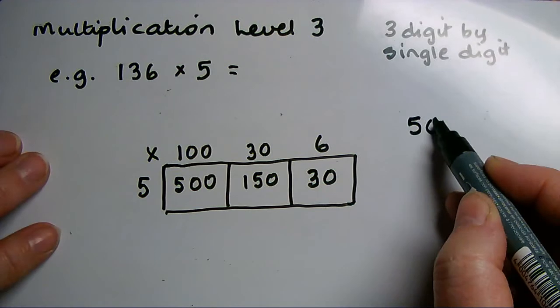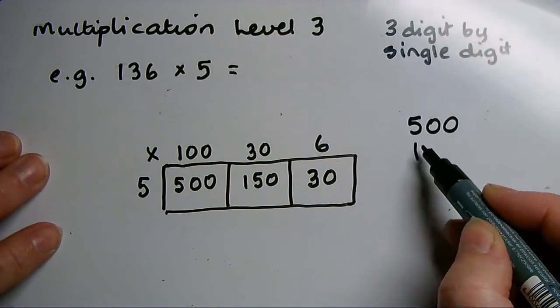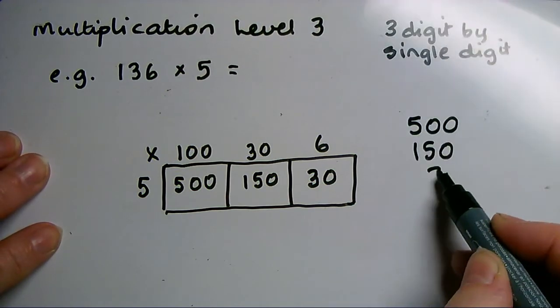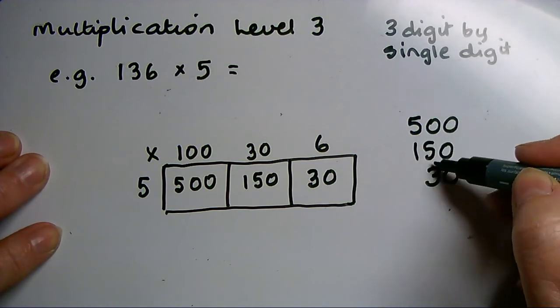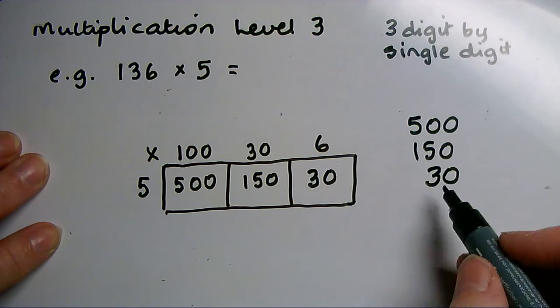So 500, add 150 and 30. I've lined it up in place value order with the three tens of 30 under the five tens of 150.